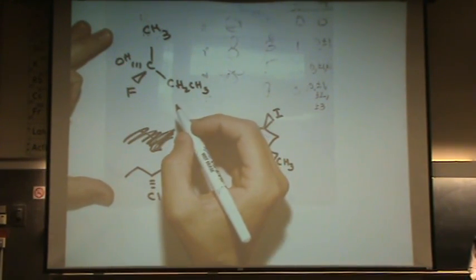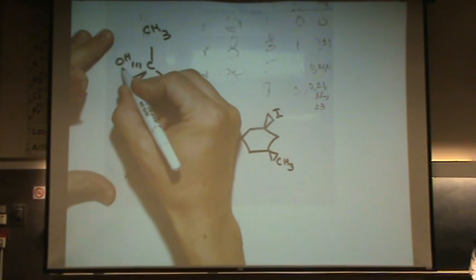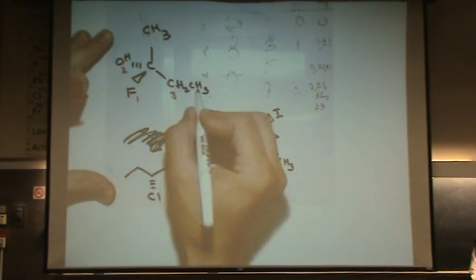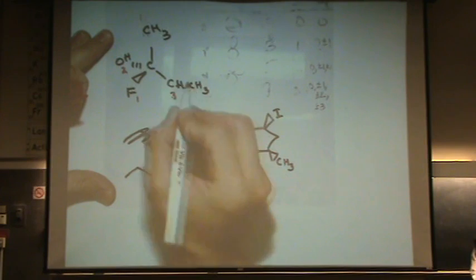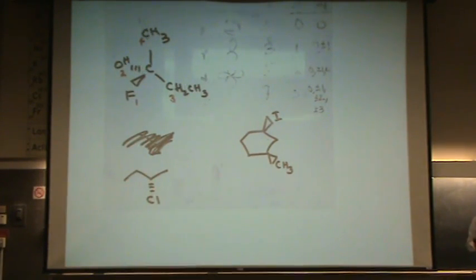Highest priority would be fluorine — that's the greatest — then oxygen, then this one because it's a carbon attached to another carbon, versus this one, carbon attached to hydrogens.